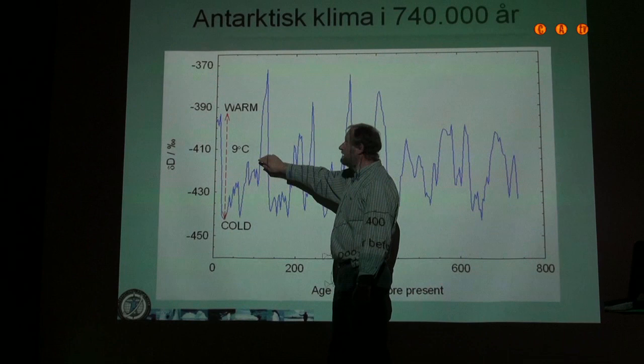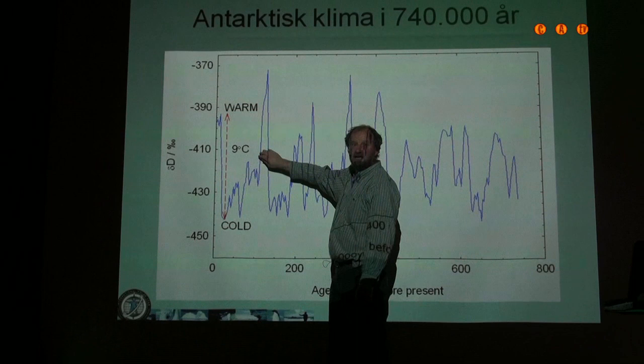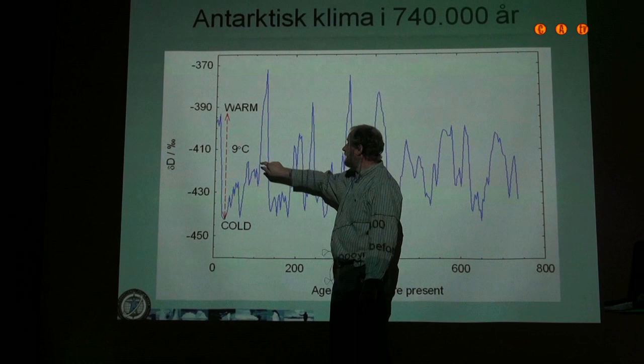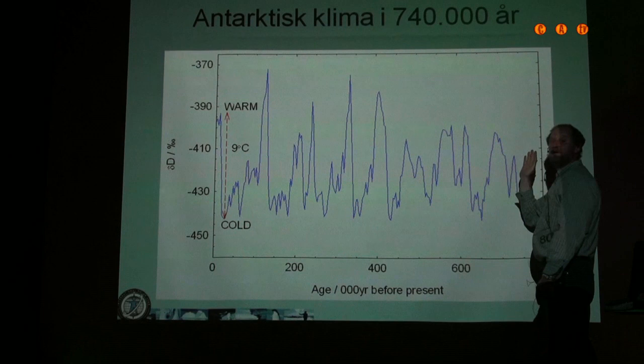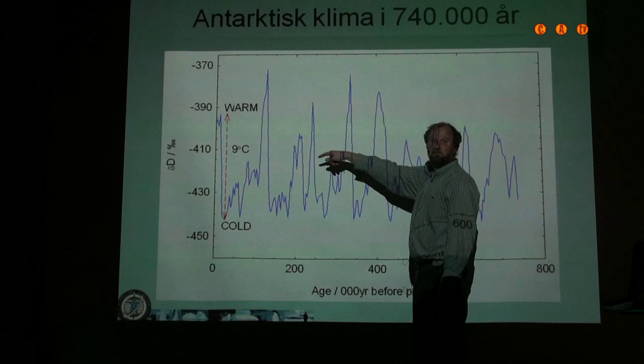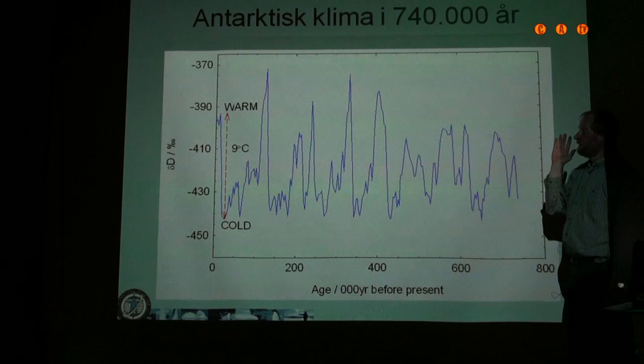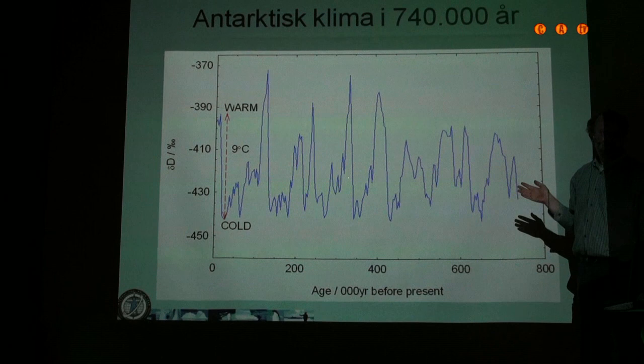Then you can see this spike — what we call the previous interglacial, like the pause in a soccer match. Then you have an Ice Age, a short interval, an Ice Age, short interval, Ice Age, and so on. Going back 800,000 years, there have been eight Ice Ages with varying interglacials. If you look at the overall picture, the normal thing is actually Ice Age, and the exception is what we perceive as normal — our climate.